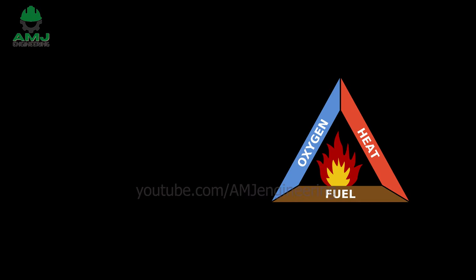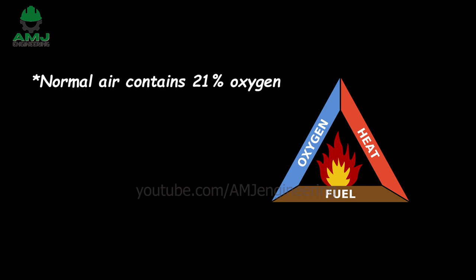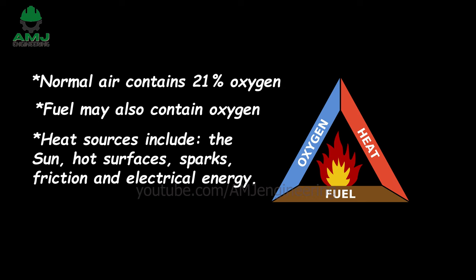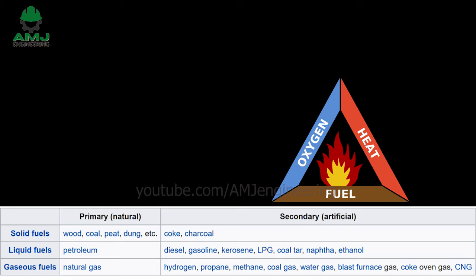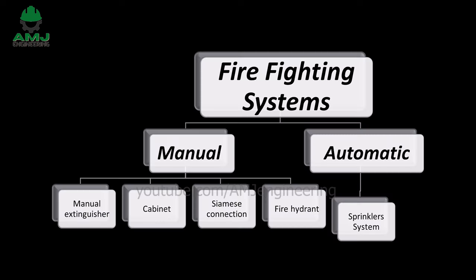Here are some facts about the fire triangle to keep in mind. Normal air contains 21% oxygen. Fuel may also contain oxygen. Heat sources include the sun, hot surfaces, sparks, friction, and electrical energy. Fuel sources can be a solid, liquid, or gas. Fire fighting systems are classified as either manual or automatic.